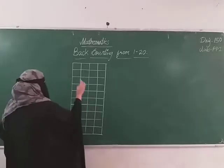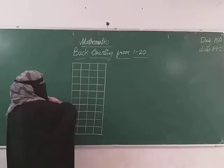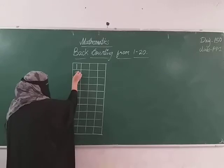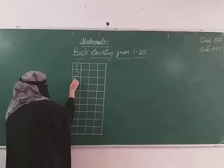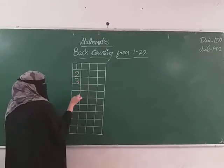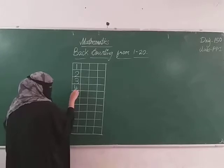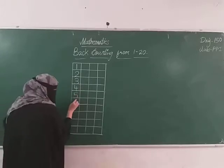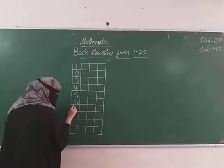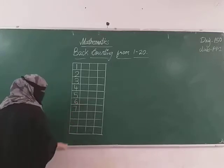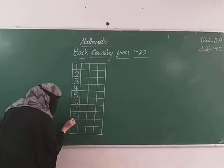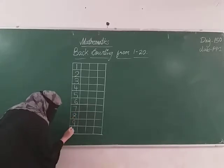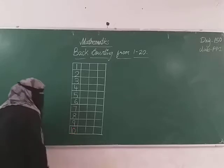Look at the screen. See here, we are just going to write numbers one after one: 1, 2, 3, 4, 5, 6, 7, 8, 9, and then 1, 0 — that is 10.